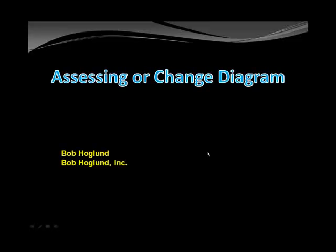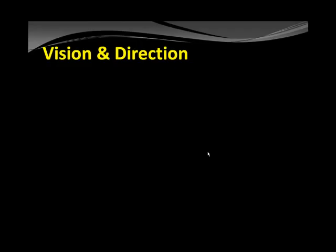The Assessing or Planning Change Diagram. Hi, this is Bob Hoagland of Bob Hoagland Incorporated. We provide better results through healthier relationships and increased responsibility. There are six components or elements that must be addressed when planning for change or assessing the change process. The first one is the vision and direction — some people also call it the aim, purpose, or reason that a business or school exists.